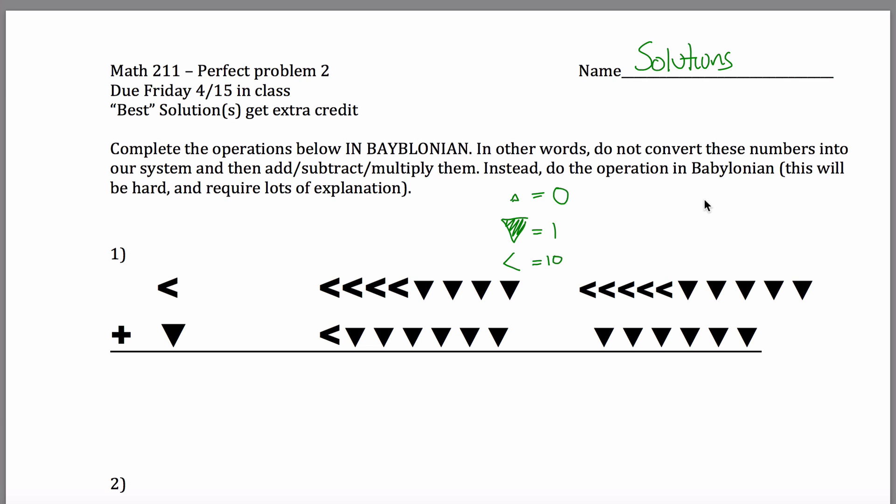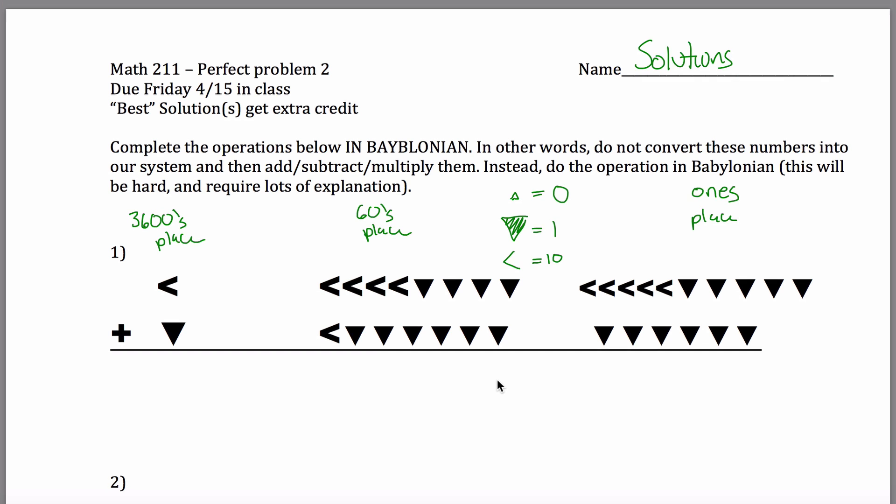And you also have to know that in our place value system, these are ones, these are 60s, and these are 60 times 60, in other words, the 3600s place. I guess you don't really need to know that it's the 3600s place, you just have to know that they're in a base 60 system.